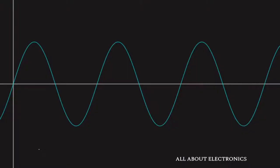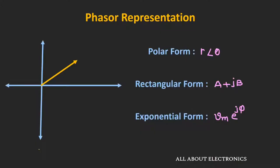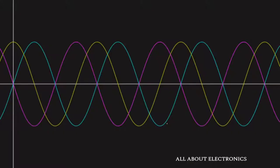In the last video, we had seen that any sinusoidal signal can be represented using a phasor, which is nothing but representing this sinusoidal signal using a complex number. We can represent this phasor either in polar form, rectangular form, or in exponential form. This phasor representation is particularly useful when we have more than one sinusoidal signal having the same frequency but different amplitude and phase. Using the phasor and the phasor diagram, we can easily represent these sinusoidal signals.